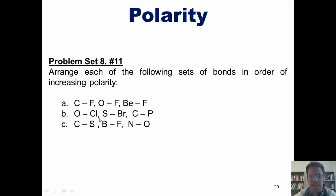I'll go ahead and pick example A. We've got carbon bonded to fluorine, oxygen bonded to fluorine, and beryllium bonded to fluorine. Which of those has the most polar bond? Well, you'll note that beryllium is a metal and fluorine is a nonmetal. Thus, in a beryllium-fluorine bond,